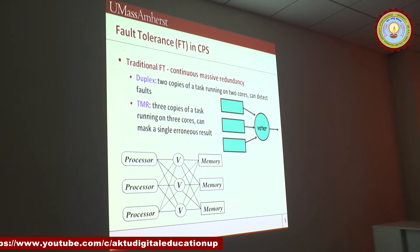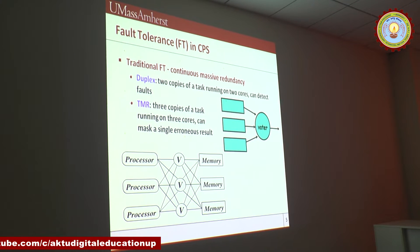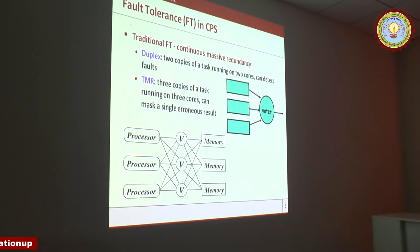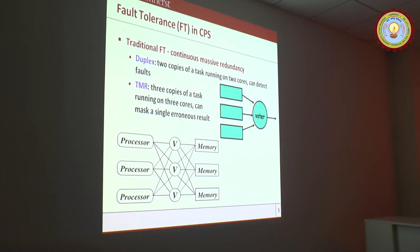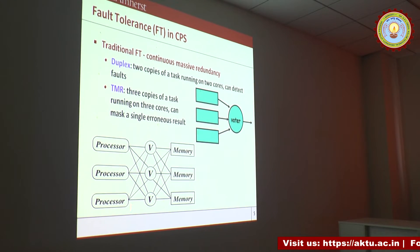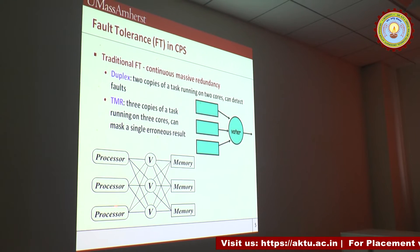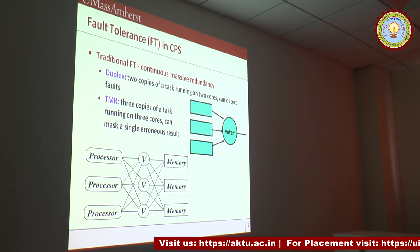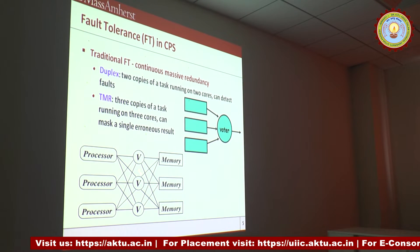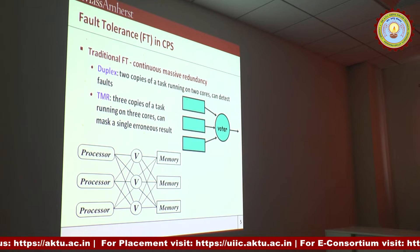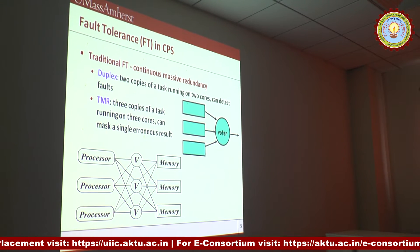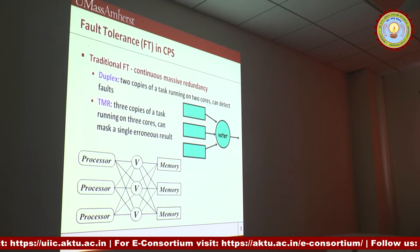So a better way is to split the logic into two or more sections — have the processors on one hand, the memories on the other hand, and now have three voters. In this organization, you may have a faulty memory, a faulty processor, and a faulty voter, and still the system works properly because the majority of the signals are correct.